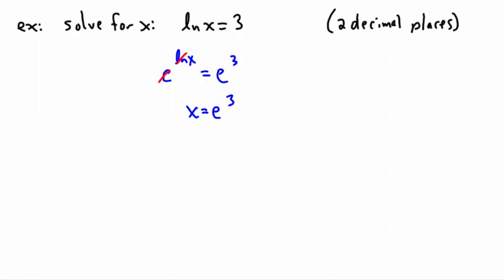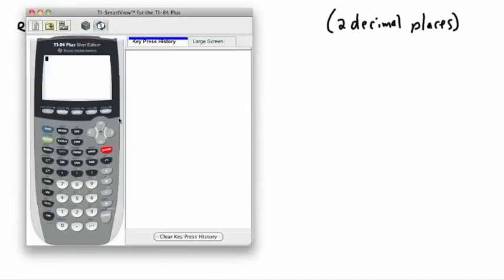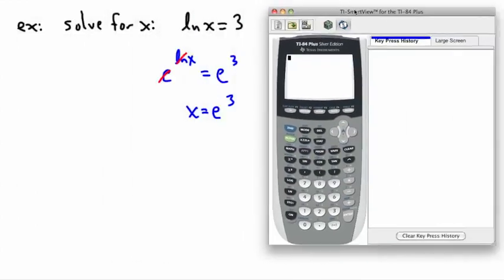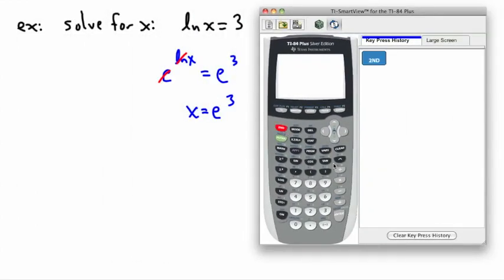If we wanted it to two decimal places, then we could actually calculate it. So we could say, great, what is E to the power of 3? So I could actually use this one right here, I think it is. So E to the X. So E to the power of 3.